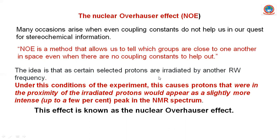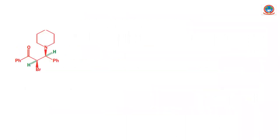When you provide the second radio wave to one group, that group will not appear in the NMR spectrum, but the other group will appear slightly more intense — a few percent more, not double. You can identify this increase and it appears as a peak in the NMR spectrum. If there is an increase in intensity due to double irradiation, we can say NOE is working for our compound.